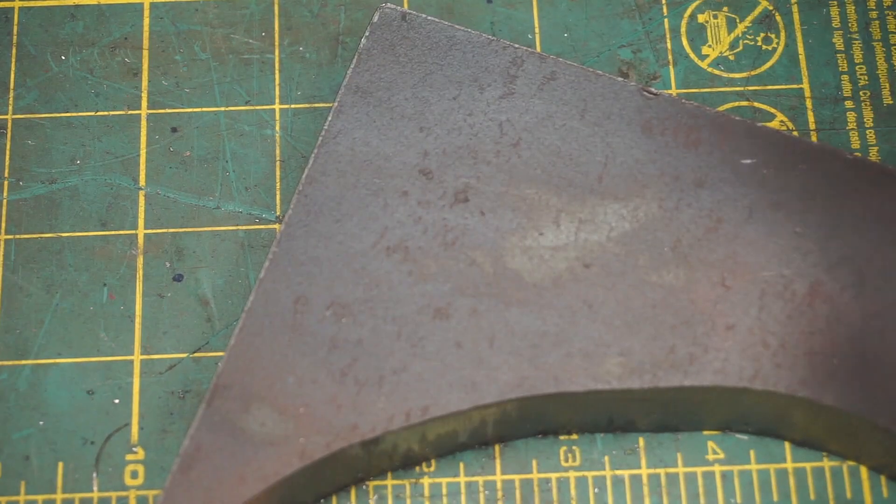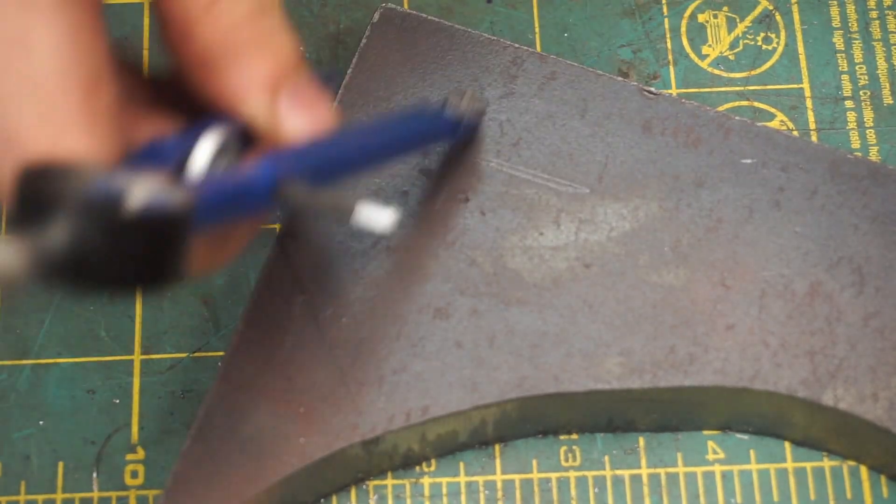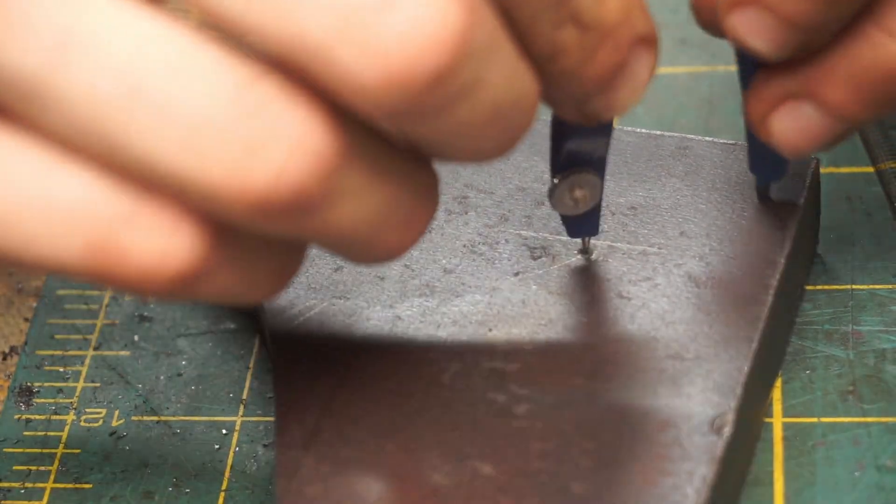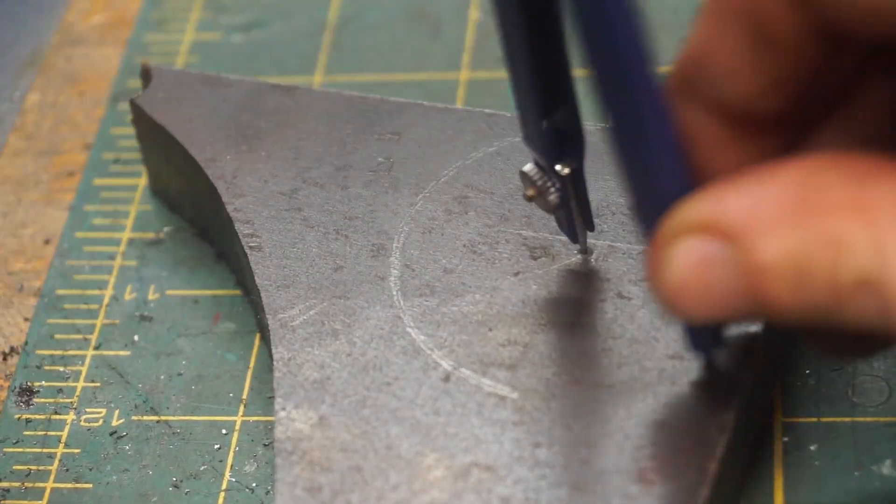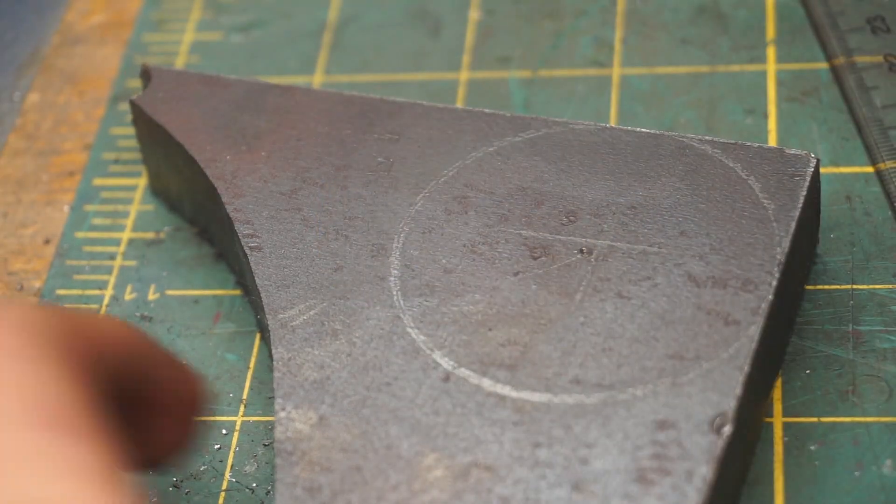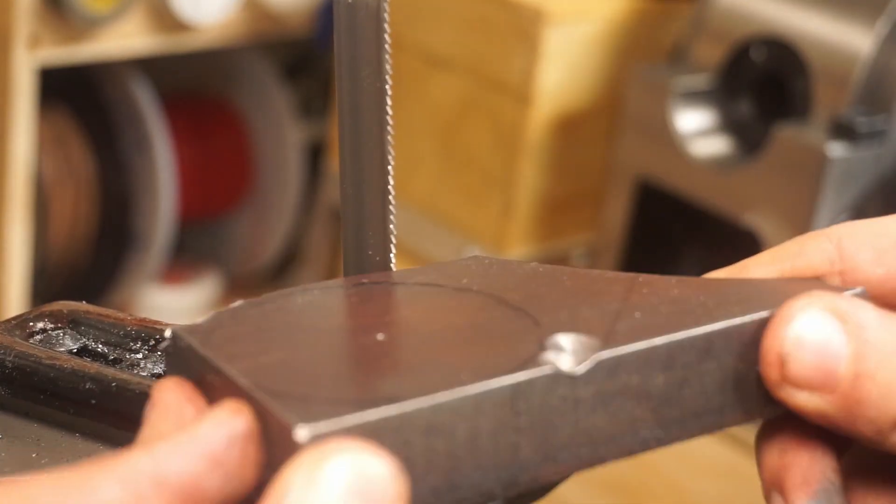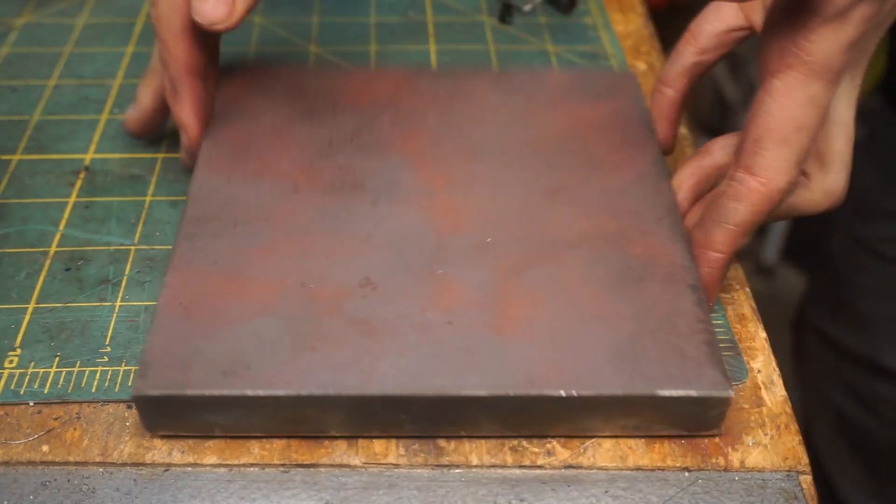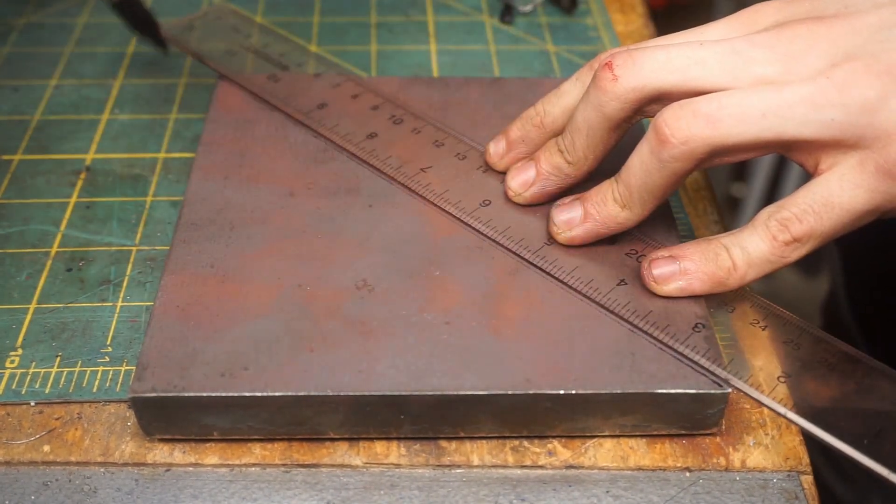From one of the offcuts I'll trace out a smaller approximately two inch circle. This is going to become the smaller gear. And finally, I'll turn this last piece of steel into the wheel for the other side.